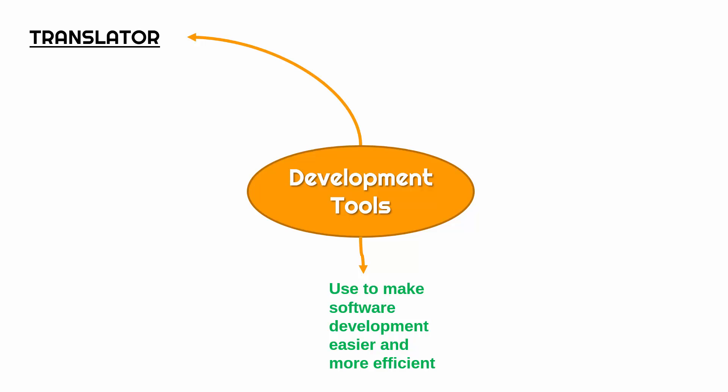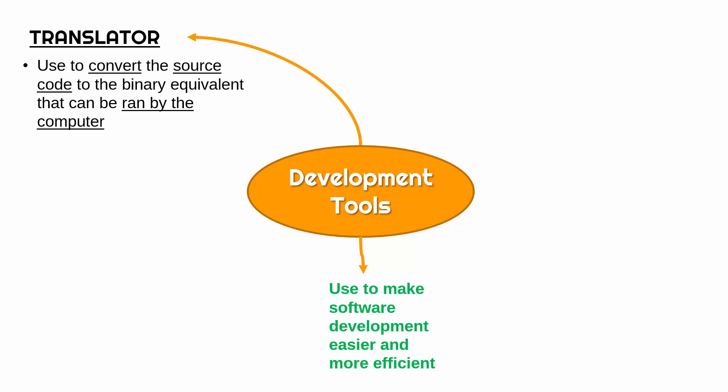The most essential, arguably, is a translator. You can write program code in Notepad or any way you want on a computer, but to actually convert it into a format the computer can understand, you have to use a translator. The idea is we write the source code in English — quite structured English, but still English — and the translator converts it to the binary equivalent that can be run by the computer.